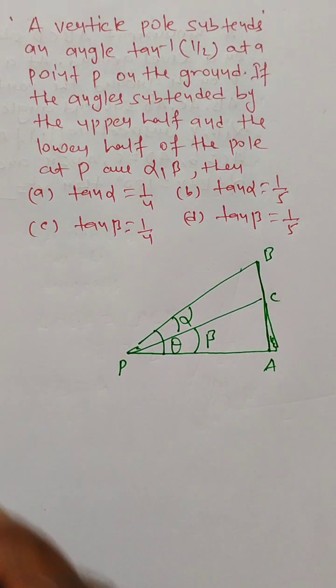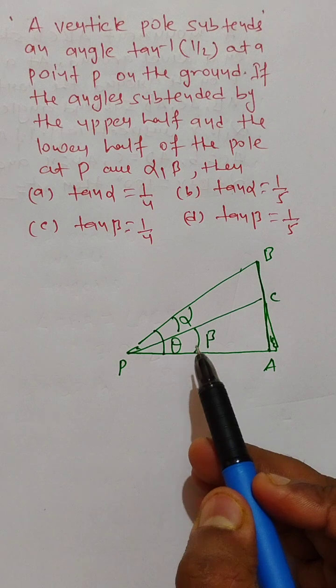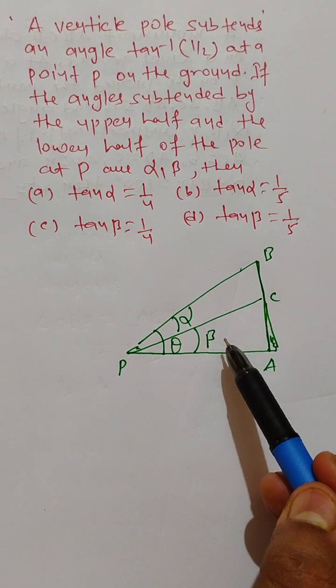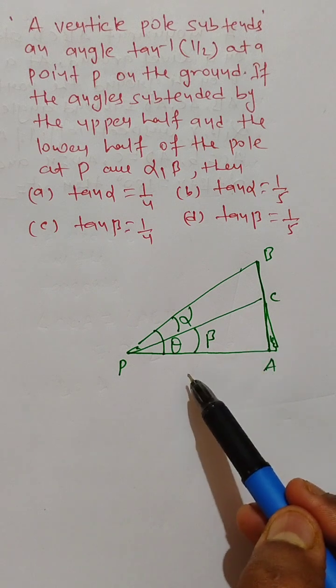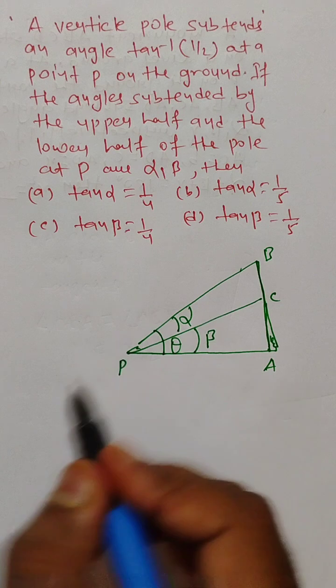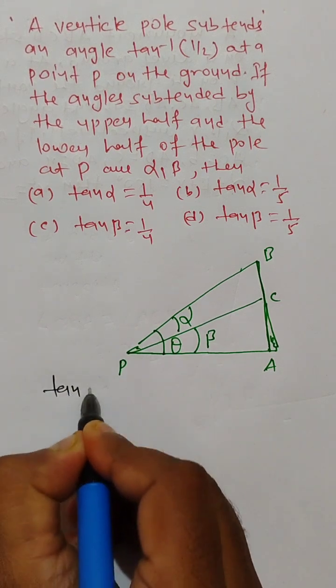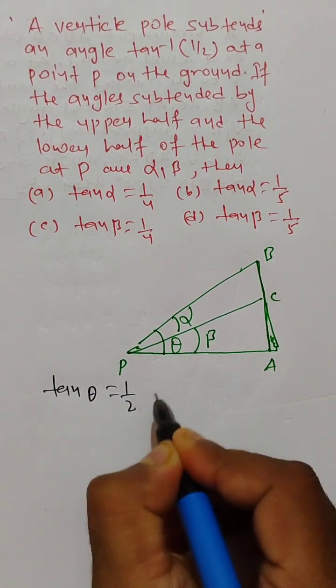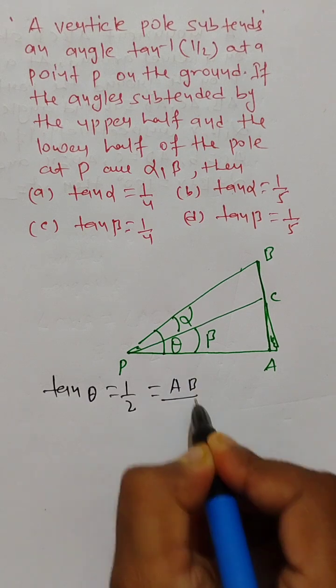So now, the pole AB subtends an angle theta at P, and the upper half BC of the pole subtends angle alpha at P. So here, we have tan theta equals 1 by 2, equals AB by AP.